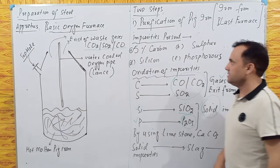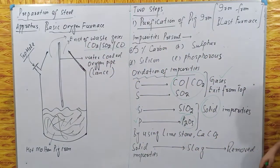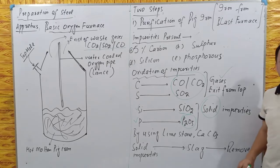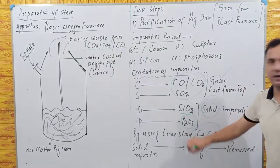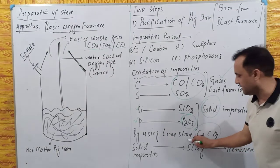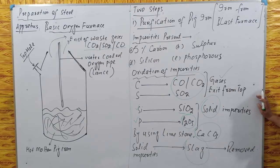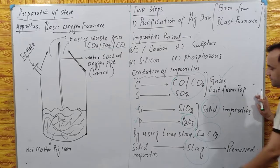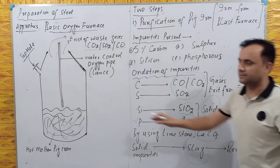Because the solid impurities are very heavy, they cannot exit with the gases. To remove them, limestone and marble are added to the furnace. These help in the preparation of slag. Slag is the mixture of solid impurities, and limestone and marble assist in forming it so it can be removed.